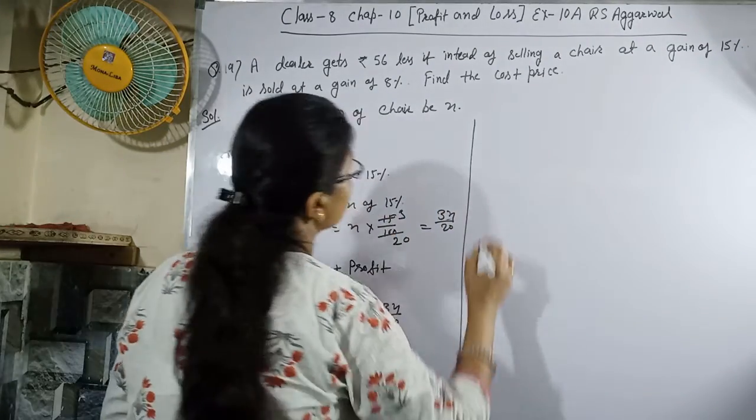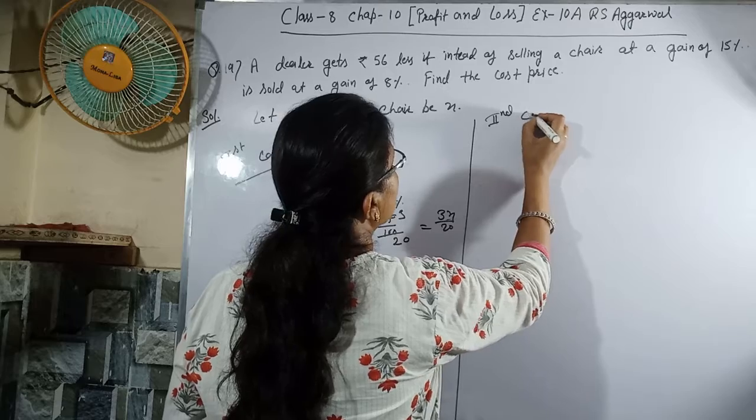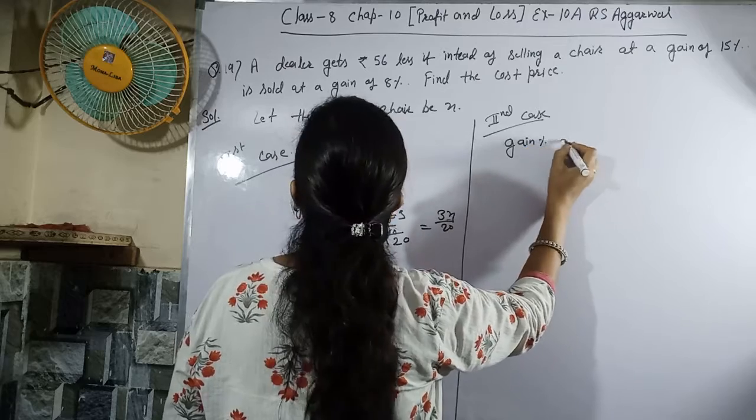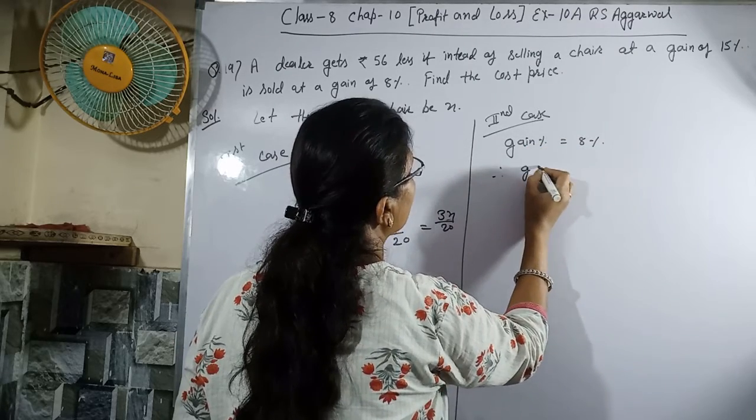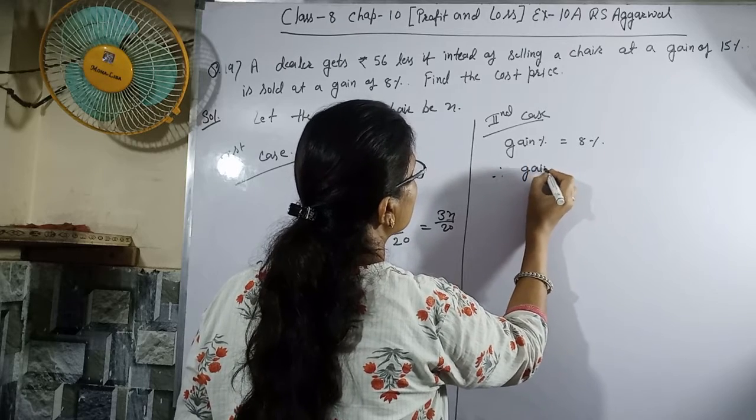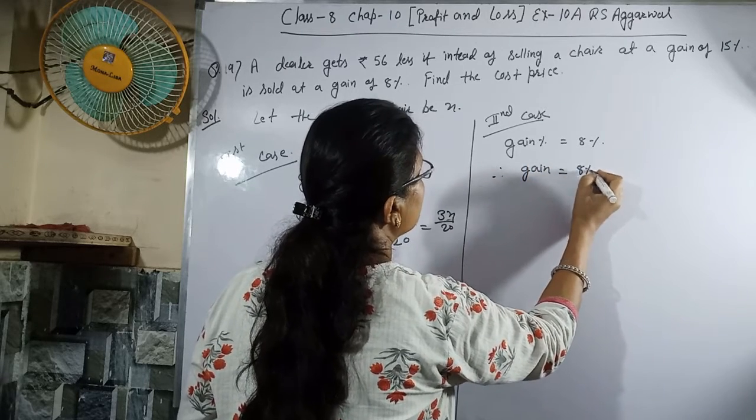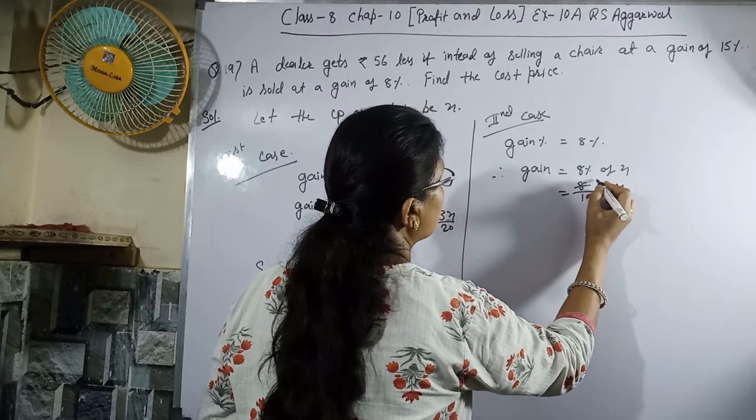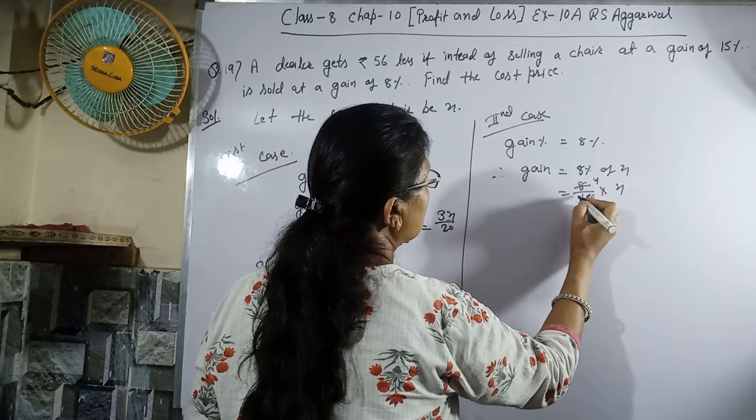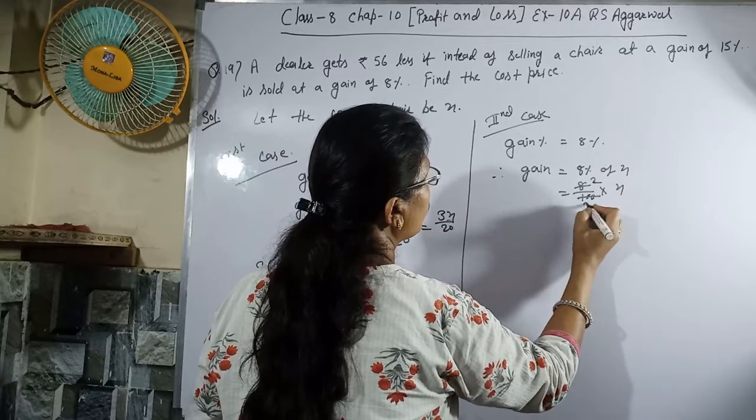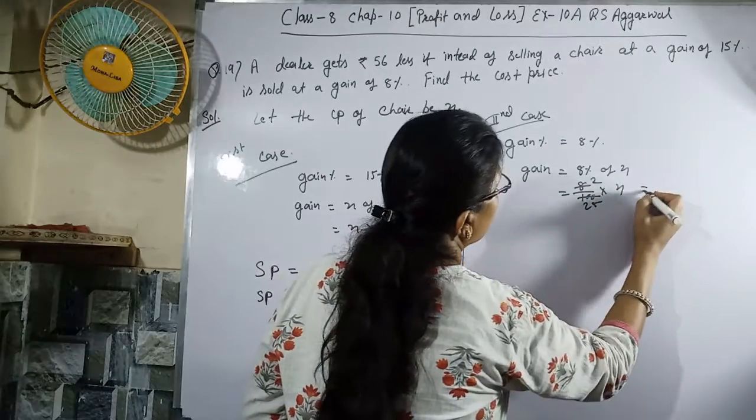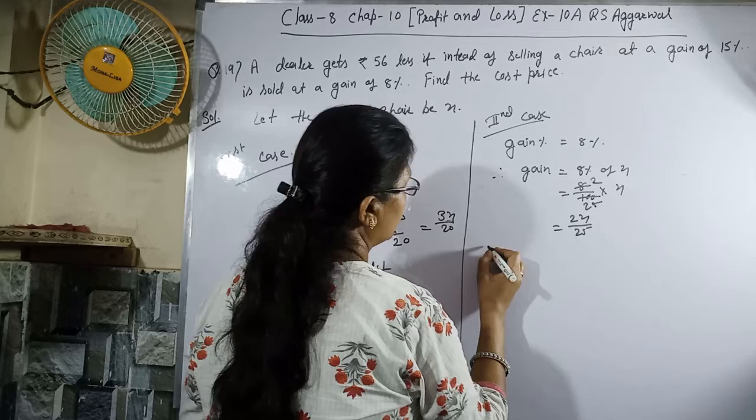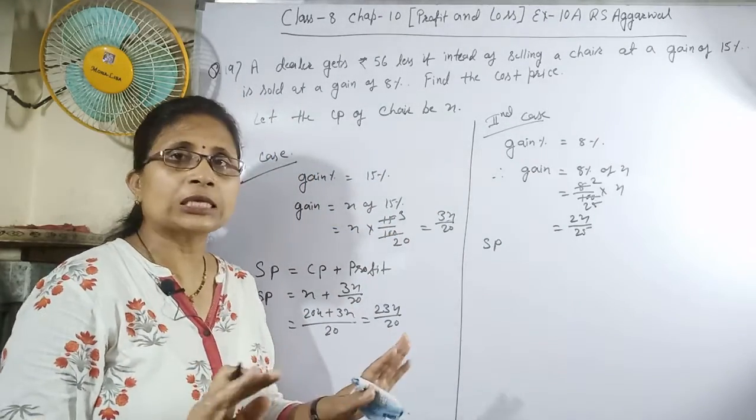Now second case: gain percent equals 8%. Therefore, gain equals 8% of x, which is 8 upon 100 multiple x, equals 2x upon 25. Now in this case, SP equals CP plus profit.